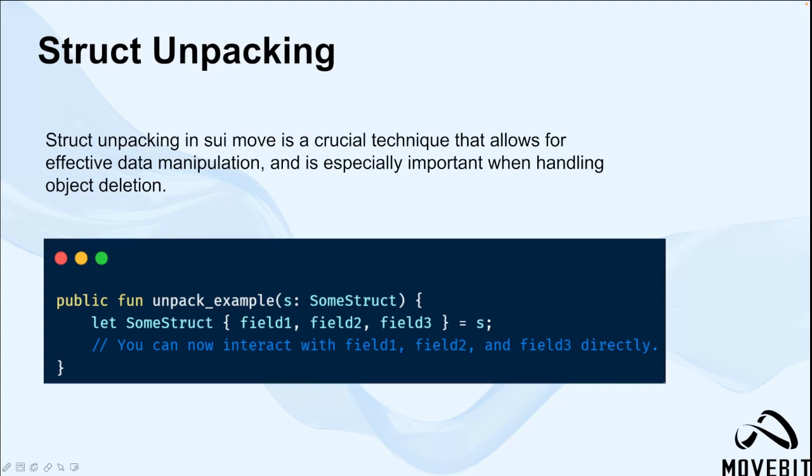Sui Move, designed for creating blockchain-based applications, places a lot of emphasis on data security and encapsulation. As a result, a structure's fields are not only accessible inside the module that defines a struct. If you want to modify or interact with the structure outside its defined module, you have to unpack it first. And here is a code example for the structure unpacking.